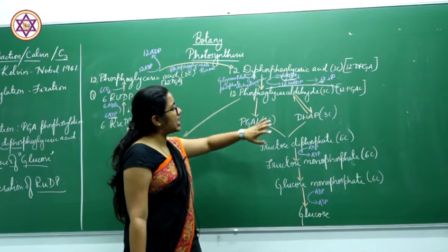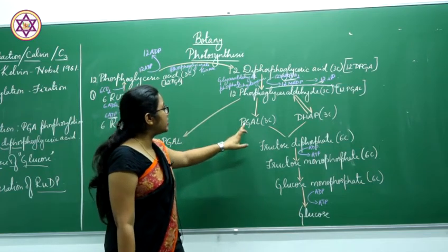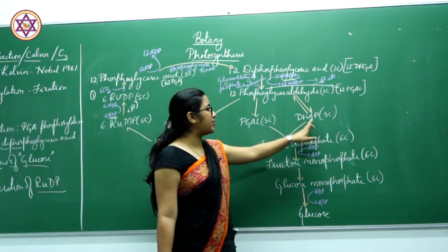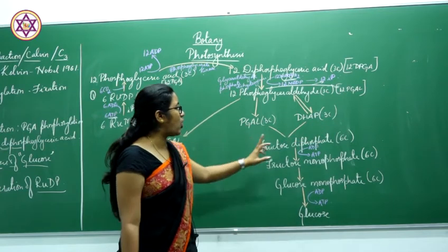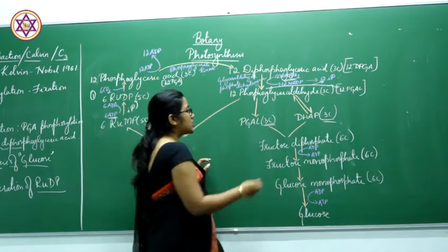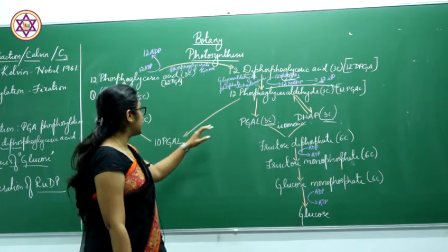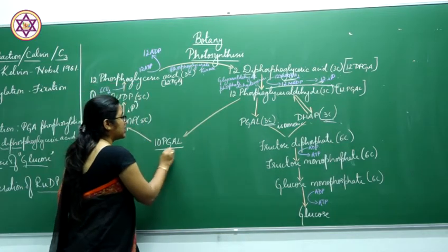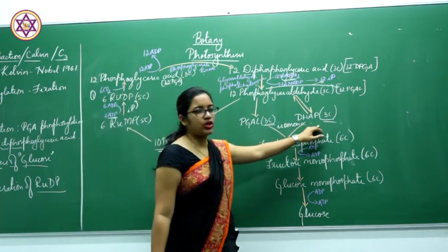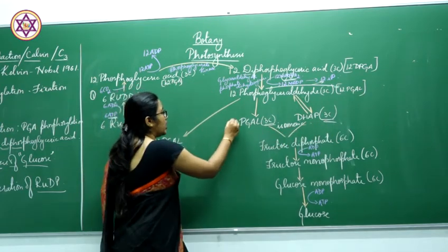When 12 phosphoglyceraldehyde molecules are formed, they show isomerism — that is PGAL (phosphoglyceraldehyde) and DHAP (dihydroxyacetone phosphate) are formed. Both are 3-carbon compounds. There are 10 molecules of PGAL, 1 molecule of phosphoglyceraldehyde, and 1 molecule of DHAP — giving 12 molecules total.